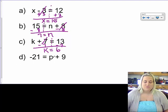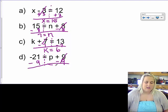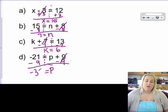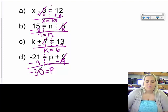On d, p is right here. 9 is being added to it. I want to get p by itself. So I'm going to do the opposite, which is to subtract 9. What I do to one side of the equal sign, I must do to the other. So I'm going to subtract 9 from over here. So 9s will cancel. I bring my p down. Negative 21 minus 9 is going to give me negative 30. Final answer.